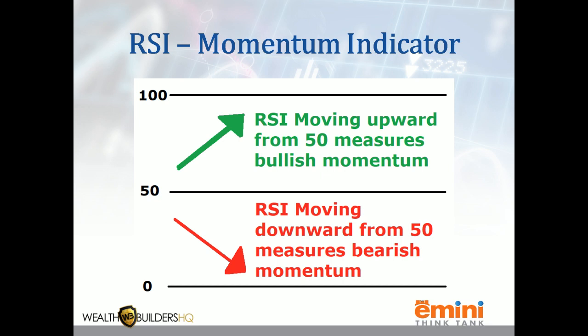The problem with using these indicators as overbought and oversold signals is that overbought can become more overbought — that's called an uptrend. And a downtrend can become oversold and more oversold. So just because something's overbought or oversold doesn't mean it's reversing. We're simply looking for momentum. Where there's lack of momentum, there's likely to be a lack of movement. Strong momentum begets more movement.